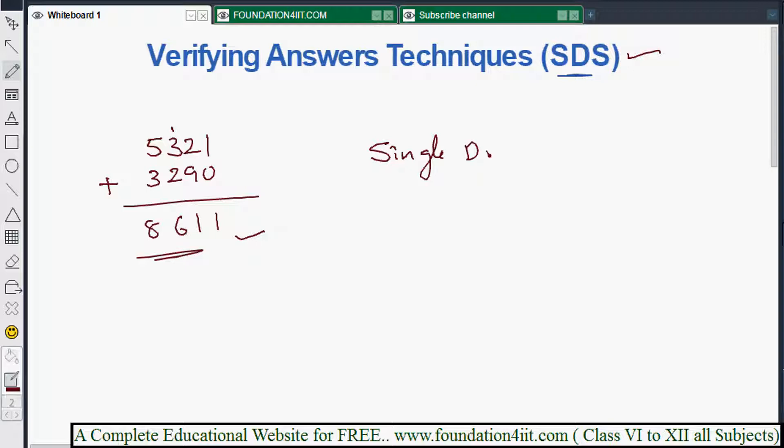Now for that, the important technique is SDS, single digit sum. In this sum means addition. Now any number is given, you need to convert into single digit. If you take first number is 5321, now each and every digit we need to add. That is 5 plus 3 plus 2 plus 1.